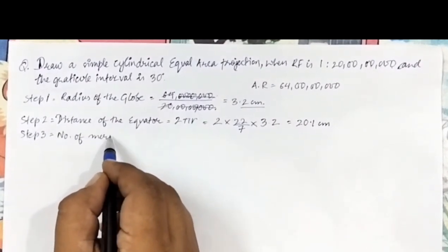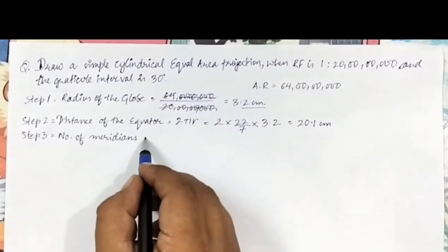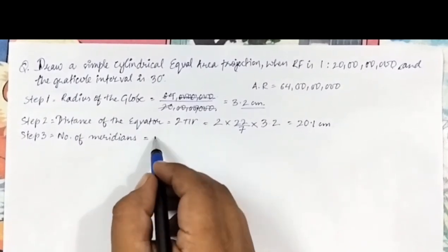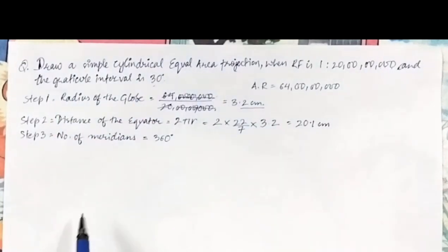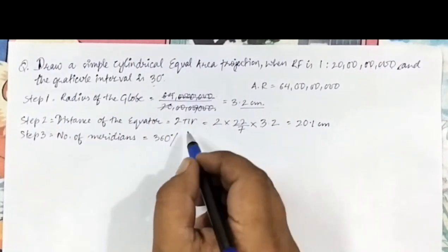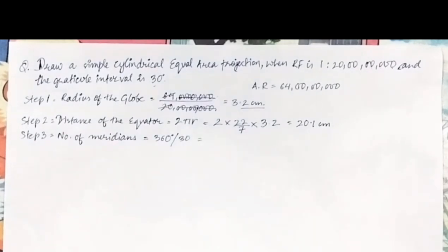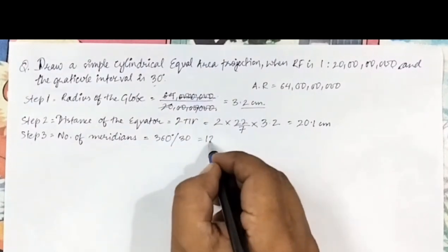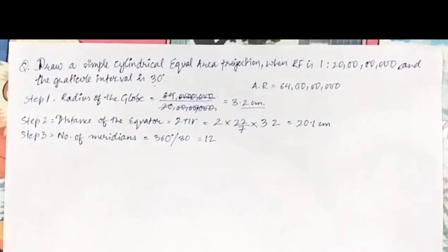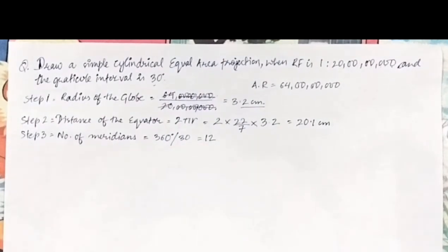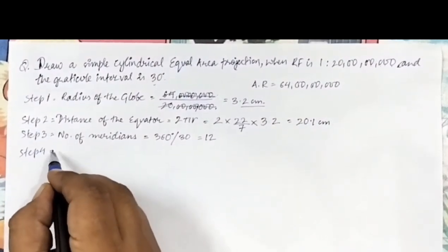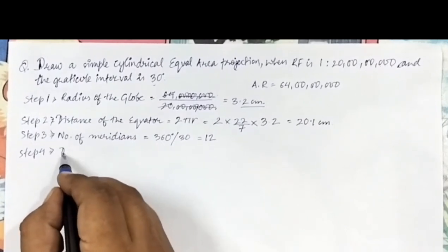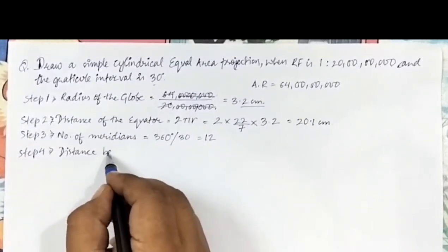Step 3: we need to find the number of meridians to draw. There are 360 meridians total in the globe, and the interval given to us is 30 degrees. So dividing 360 by 30 gives us 12 — we have to draw 12 meridians.